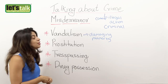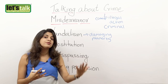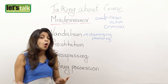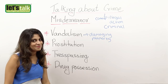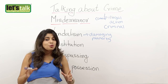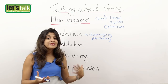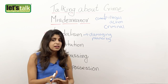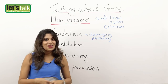The next one is trespassing. Trespassing is when you try to enter into someone's premises or onto someone's property without permission. That's called trespassing. And the last one is drug possession. Drug possession is when people have illegal drugs. Consuming or possessing drugs is illegal in many countries, so it is considered to be a crime.